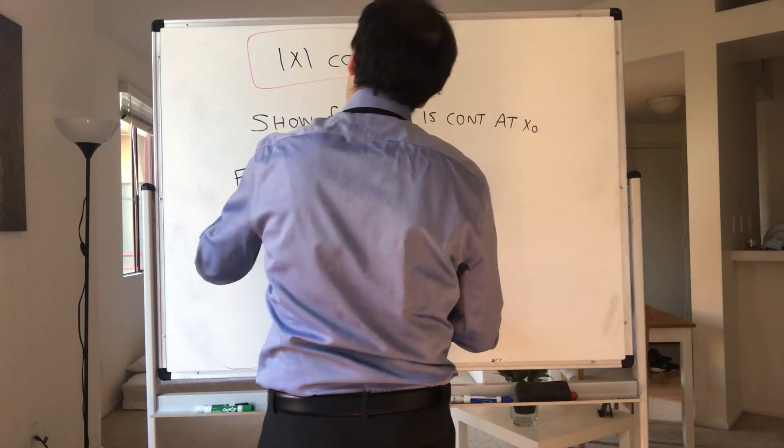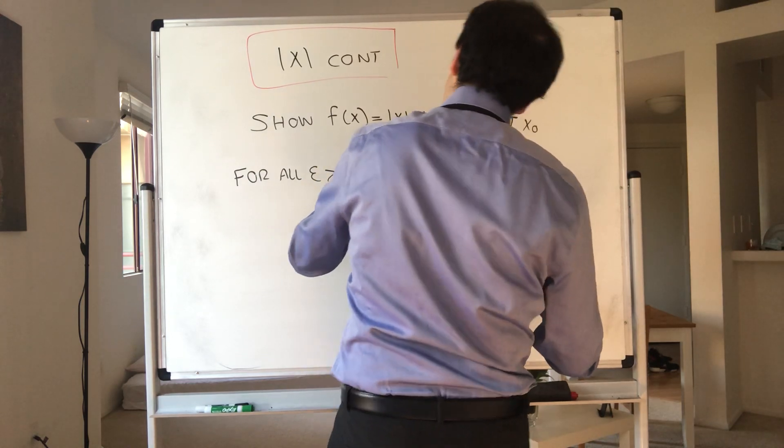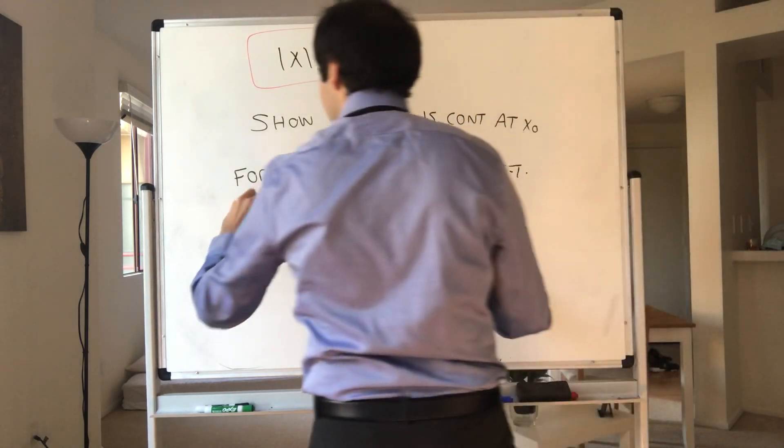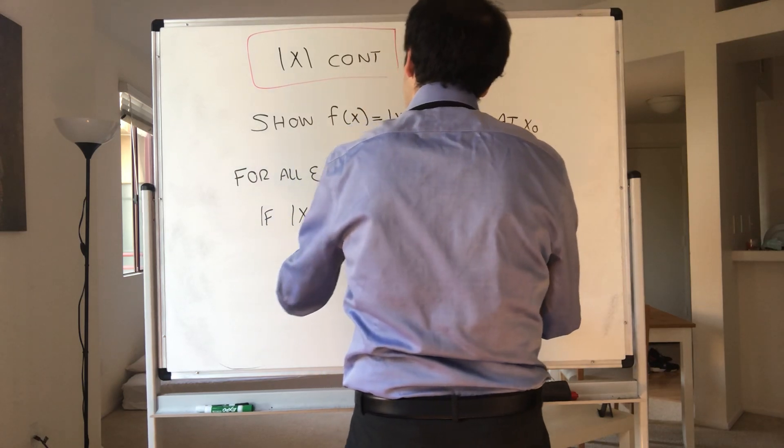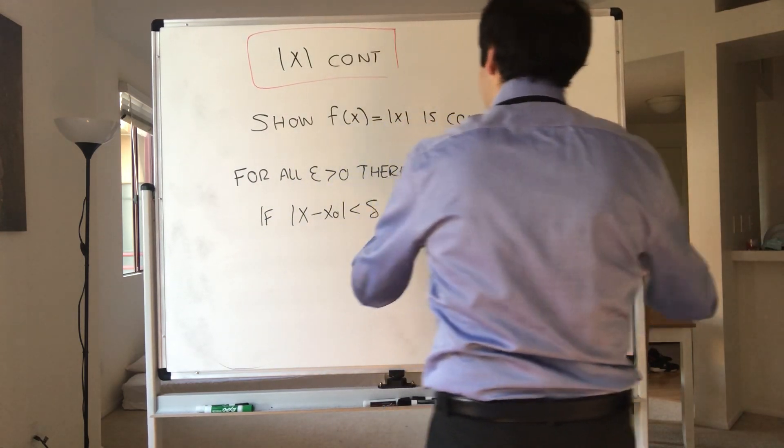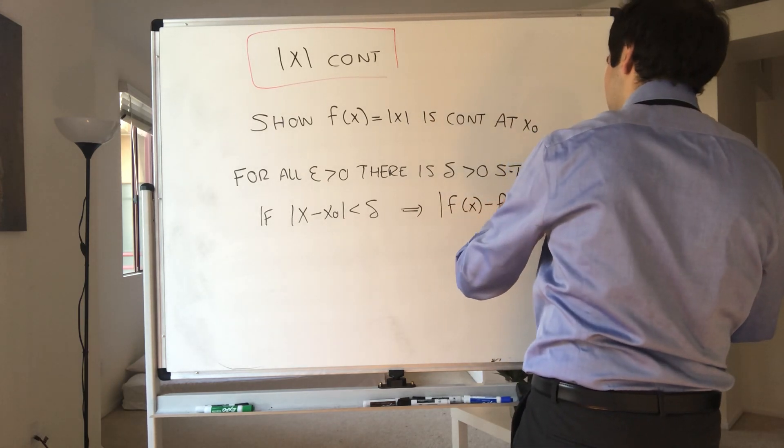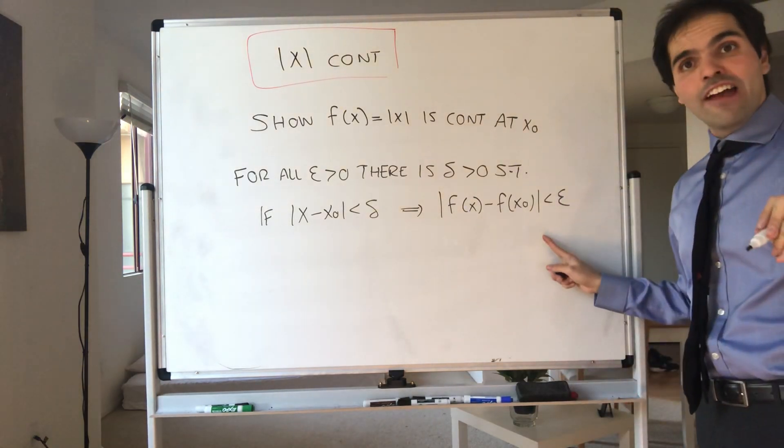there is delta positive such that if |x - x₀| is less than delta, then |f(x) - f(x₀)| is less than epsilon.